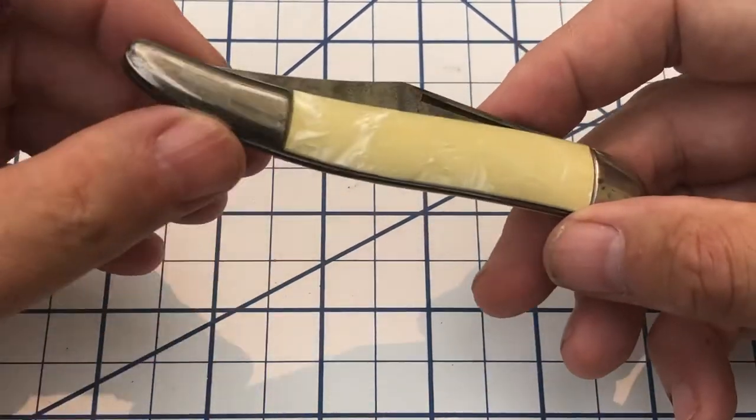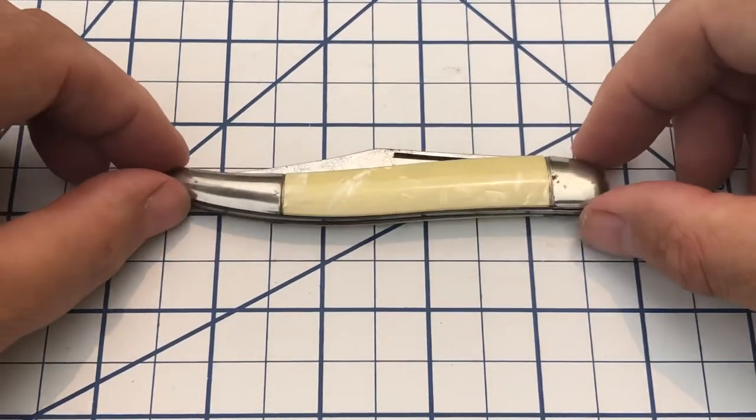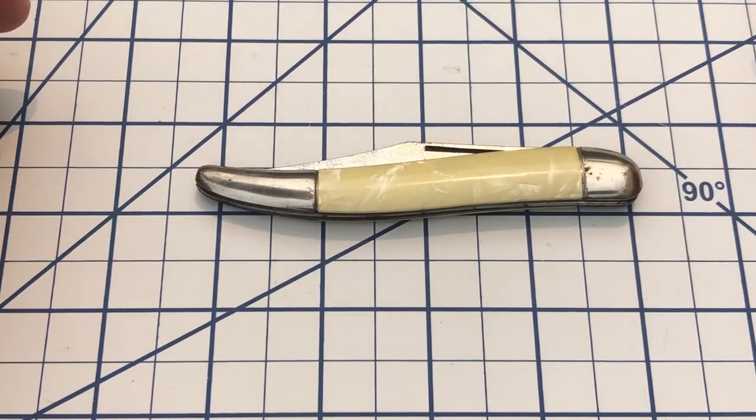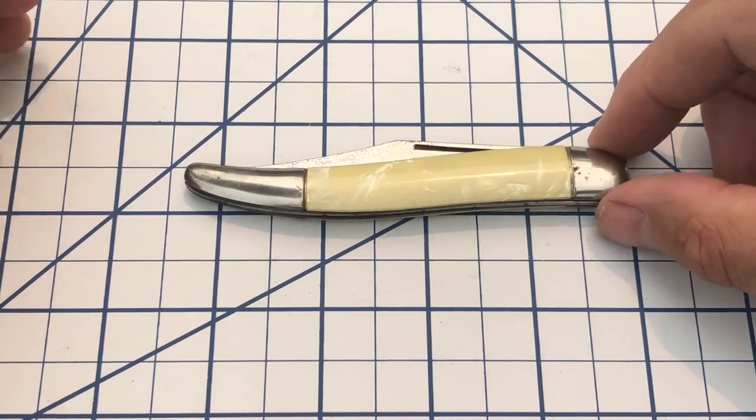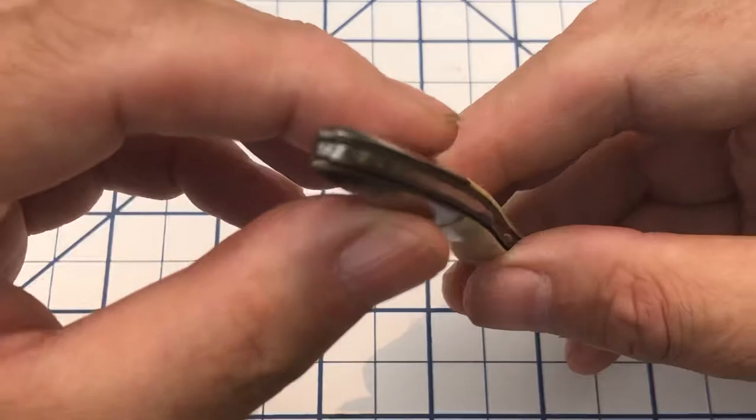You can see this knife is, as I said, a medium toothpick. It comes in at just about four and a quarter to four and a half inches long closed.